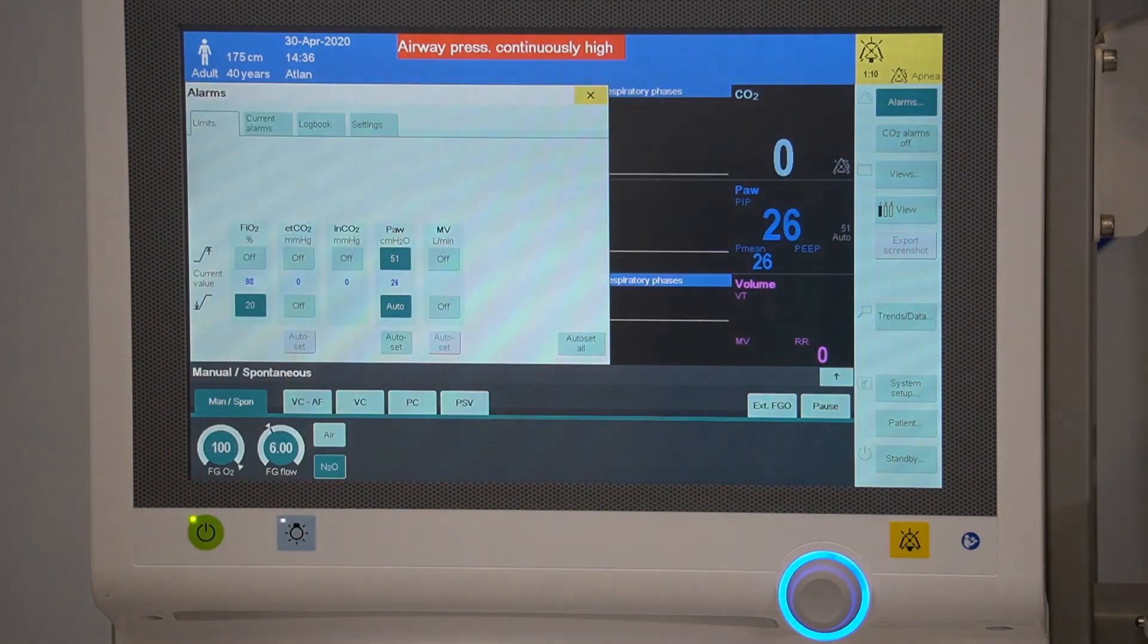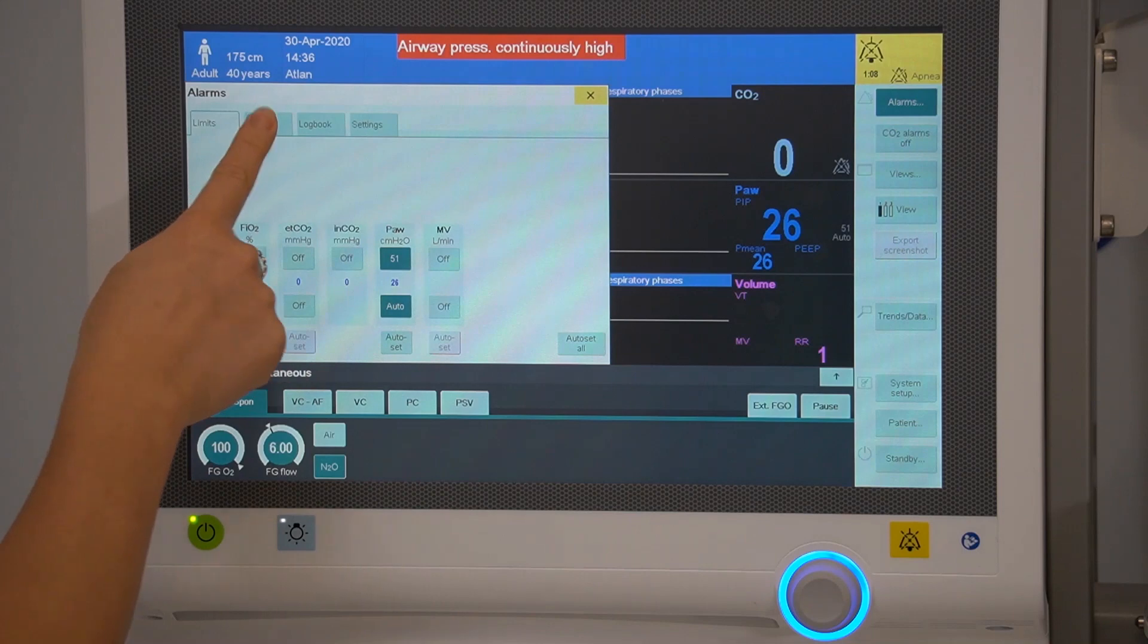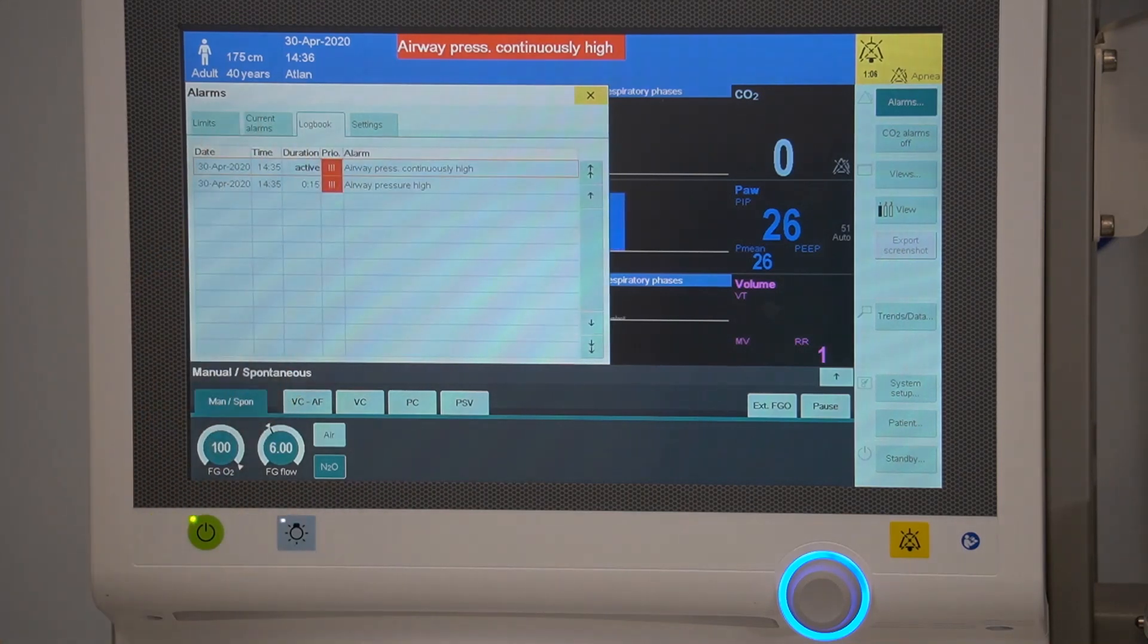Pressing this alarms menu will also give you the same options to access. Logbook will give you a display of the history of alarms for this current case.